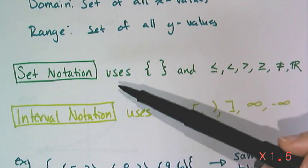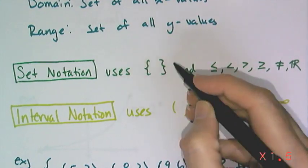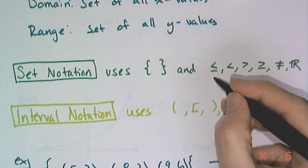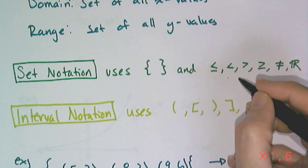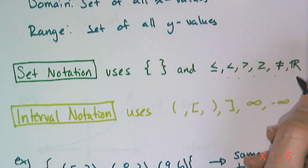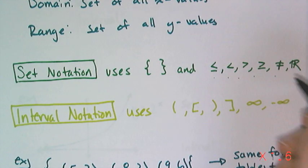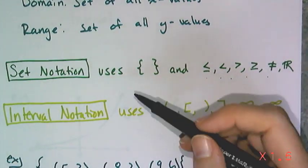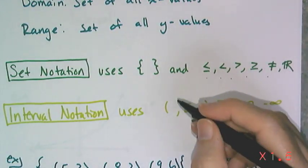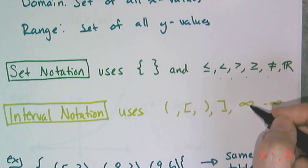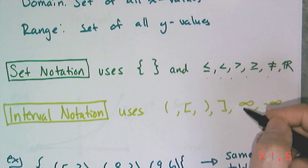Set notation you've seen before — it's with the curly braces, and it uses symbols of inequality: less than or equal to, less than, greater than, greater than or equal to, not equals, and it can also use symbols for sets like all real numbers. Interval notation is probably going to be new to you, and it uses parentheses, brackets, and the infinity symbols, which are called lemniscates.